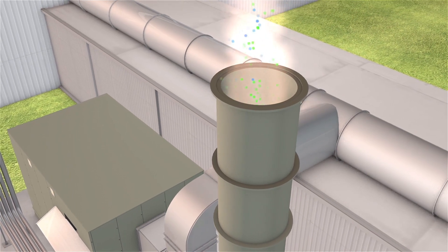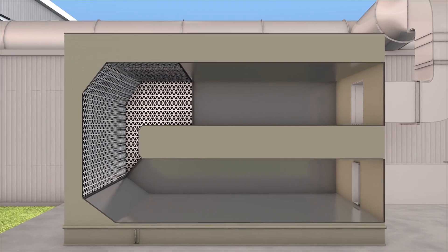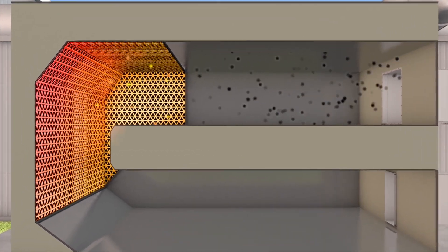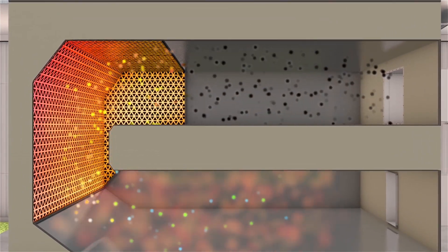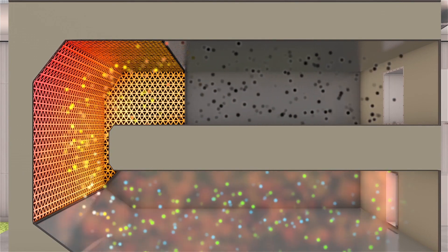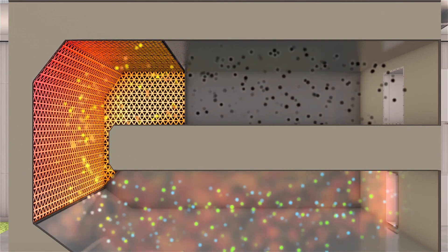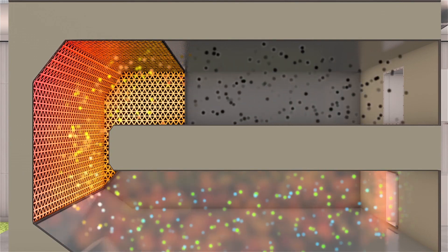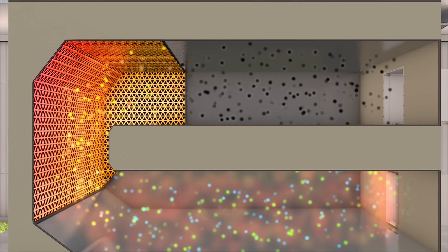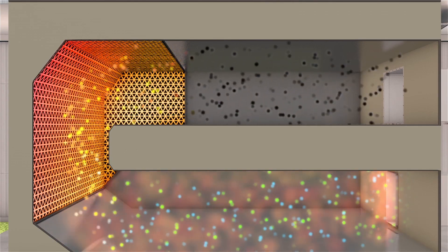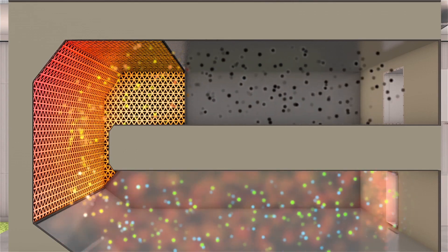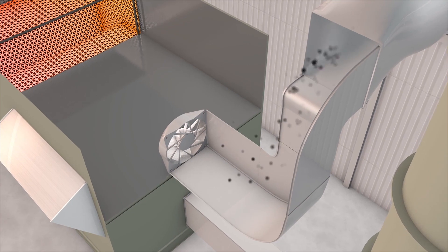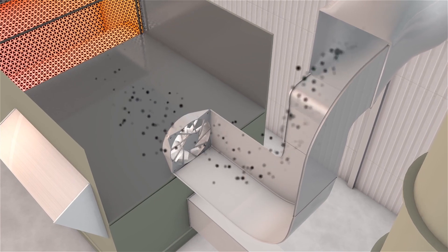It all starts with the chamber, which houses the heating element to burn the VOCs. The chamber is heated to a set point temperature of approximately 1500 degrees Fahrenheit. Once the set point temperature is reached, the fumes are brought into the chamber through a system fan.